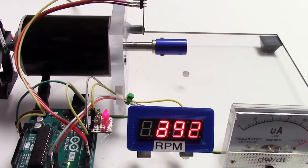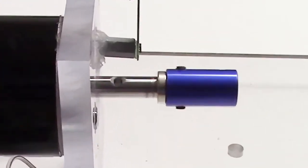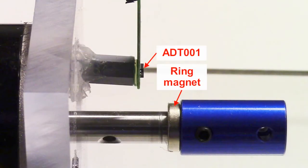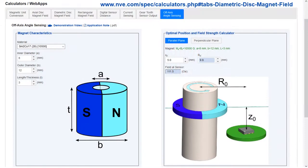We can also use the sensor off-axis with a ring magnet. There's another web app to determine the best sensor position for that configuration.